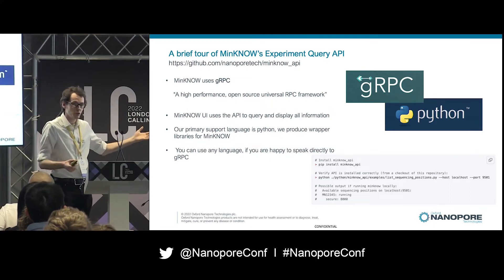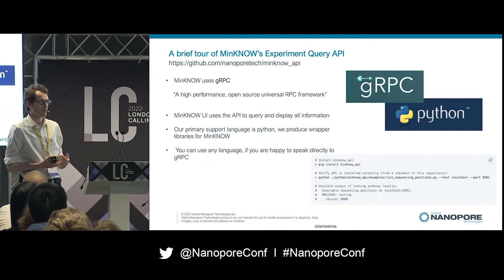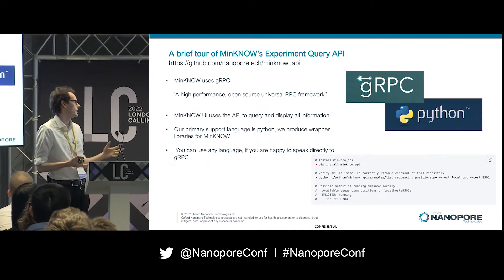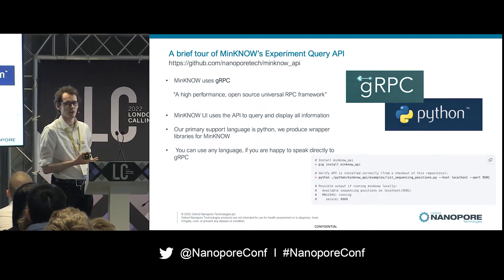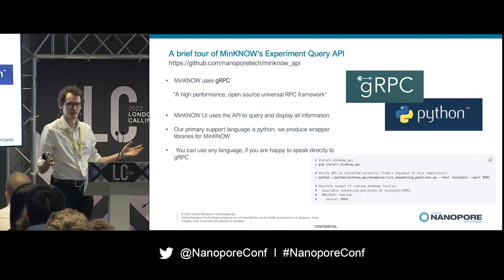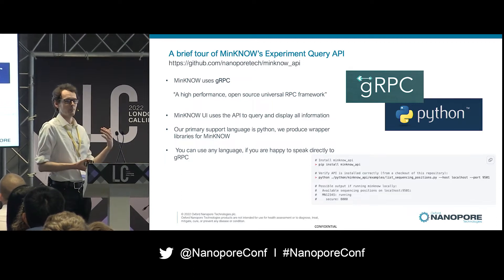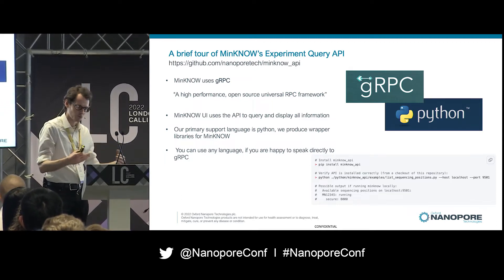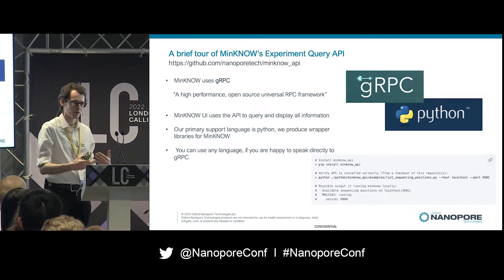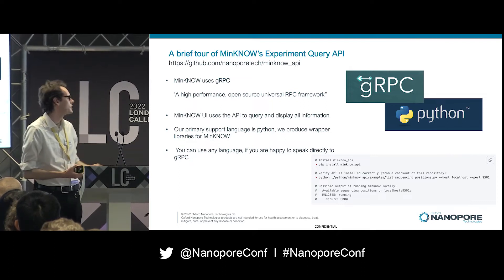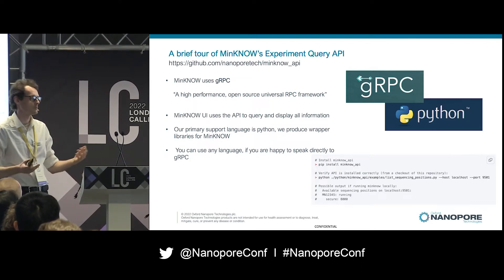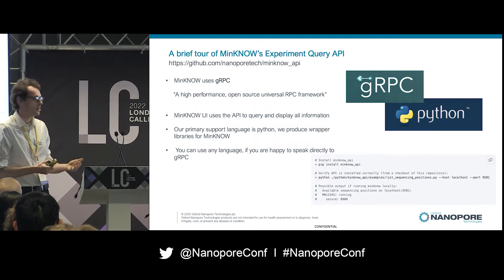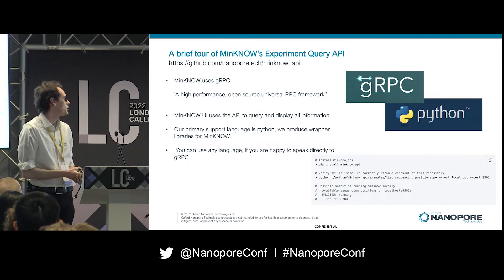You could use any language you like — gRPC comes with support for Ruby, C#, C++, and lots of other languages. You're going to have to use gRPC raw and not use the tools we provide, but customers are definitely doing that, so it's up to you and what you want to do.